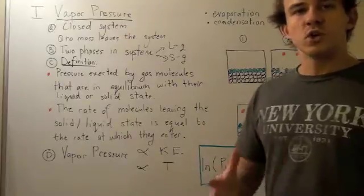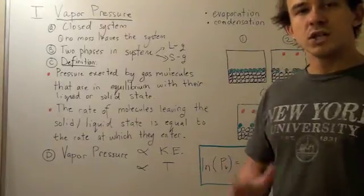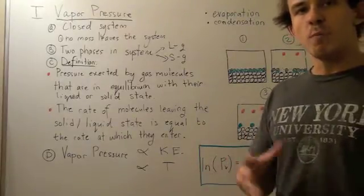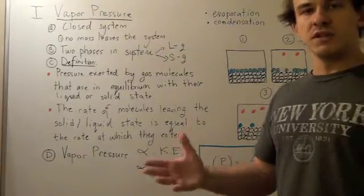Whenever we talk about vapor pressure, we talk about a closed system. A closed system is a system in which no mass leaves the system, so no molecules leave the system.